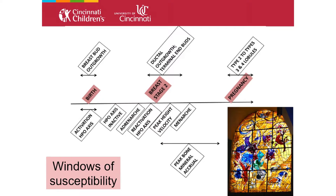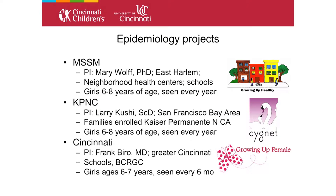Our project consists of three studies: Mount Sinai with Mary Wolf as PI, recruiting girls six to eight years of age seen annually; KPNC with Larry Cushing as PI, also recruiting girls six to eight seen annually; and in Cincinnati, we recruited girls six and seven from greater Cincinnati schools and the breast cancer registry, seen every six months to capture subtle changes in early puberty.